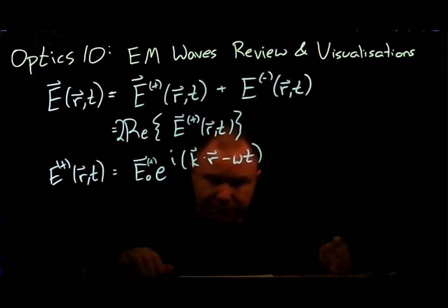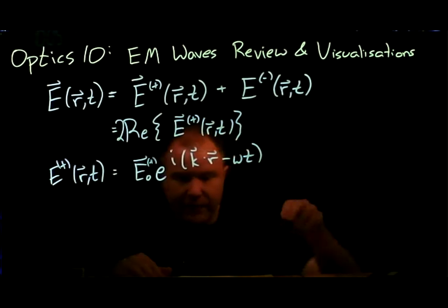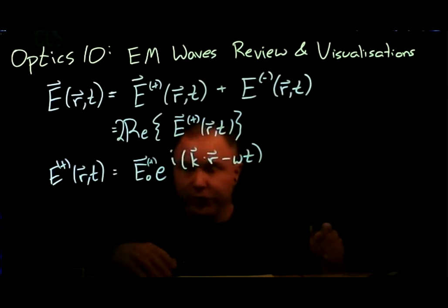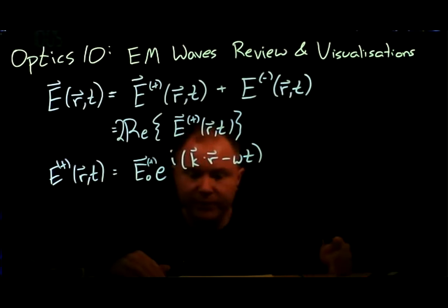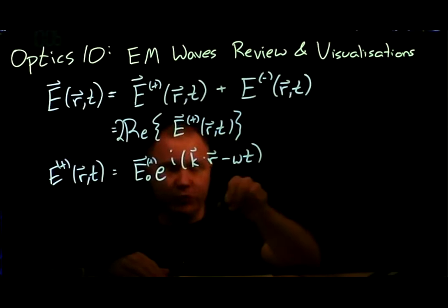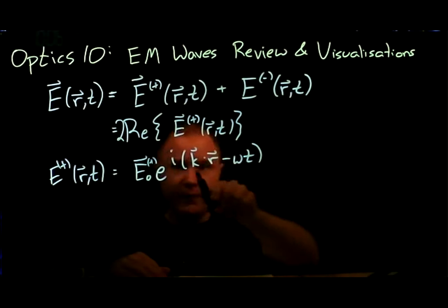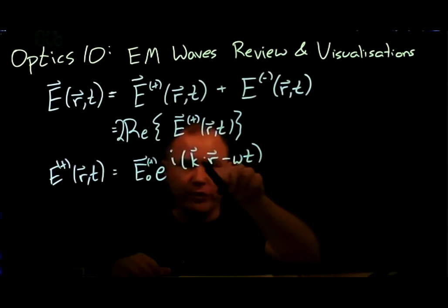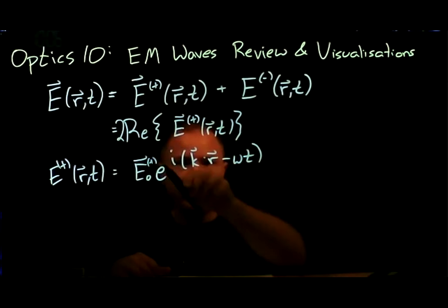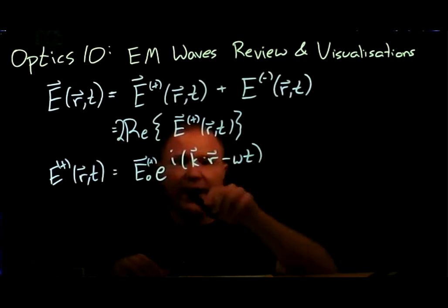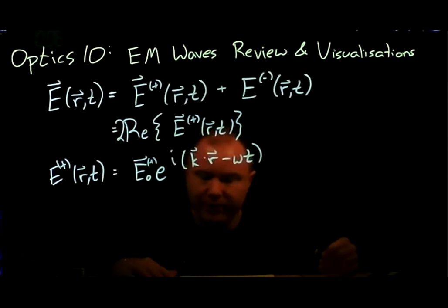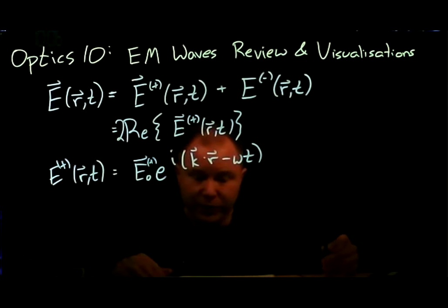Using Maxwell's equations and the fact that derivatives on this function act particularly nicely — time derivatives just bring down a minus iω and spatial derivatives bring down i times the component of k — from here you get a couple of relations.